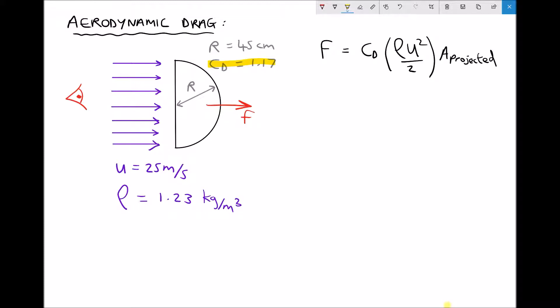Because we're dealing with aerodynamics, air, and wind speeds, the density of air at sea level and 15 degrees C is 1.23 kg per meter cubed. We'll use that as our fluid density.